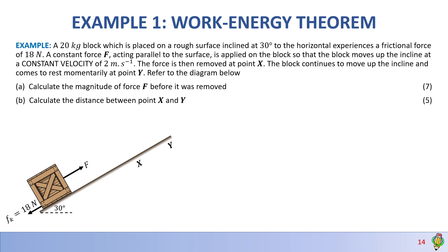A constant force F acting parallel to the surface is applied on the block so that the block moves up the incline at a constant velocity of 2 meters per second. The force is then removed at point X. The block continues to move up the incline and comes to rest momentarily at point Y, referred to the diagram below.